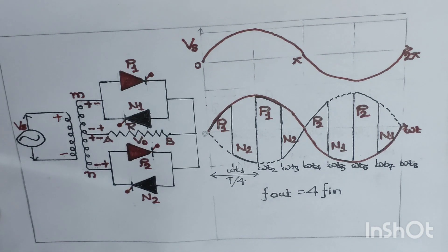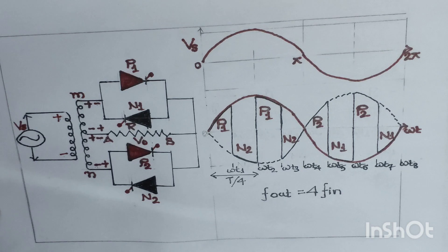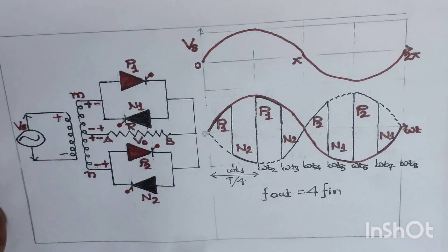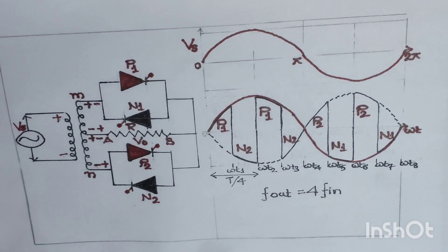This cycloconverter can be further classified as single-phase to single-phase cycloconverter, three-phase to single-phase cycloconverter, and three-phase to three-phase cycloconverter. It can also be classified according to type of connection: midpoint type cycloconverter and bridge type cycloconverter.